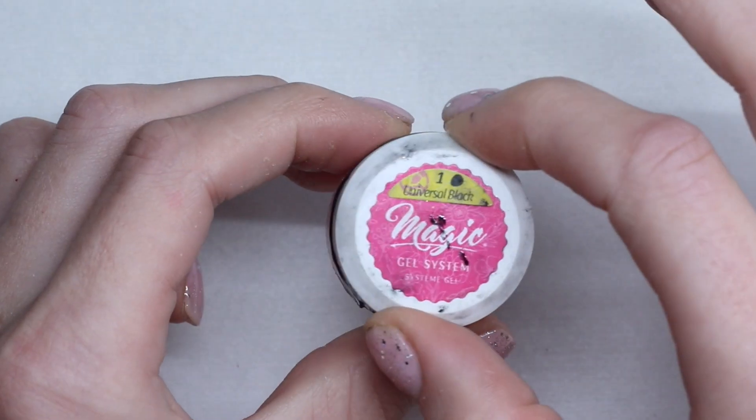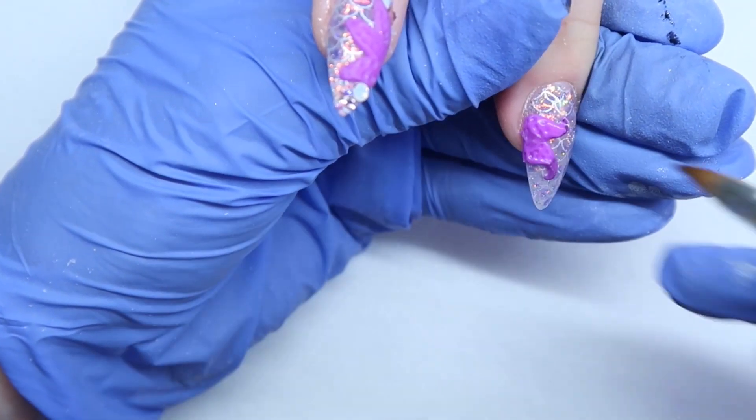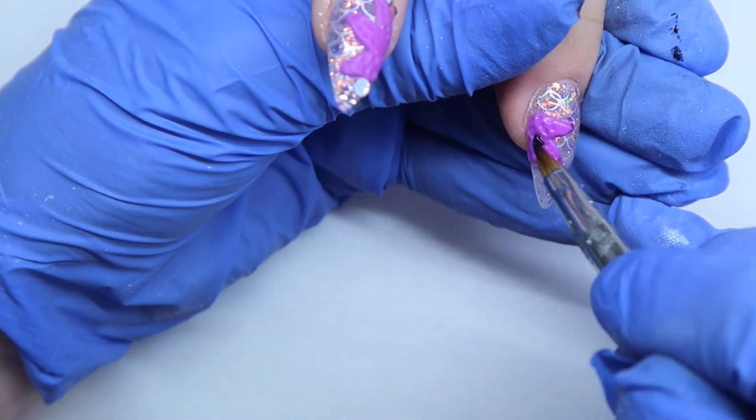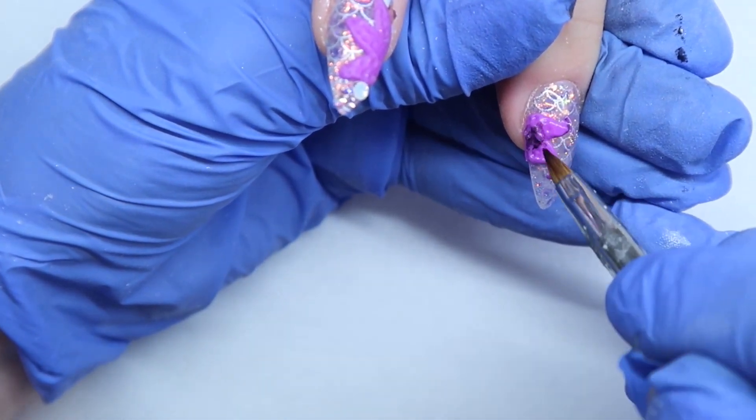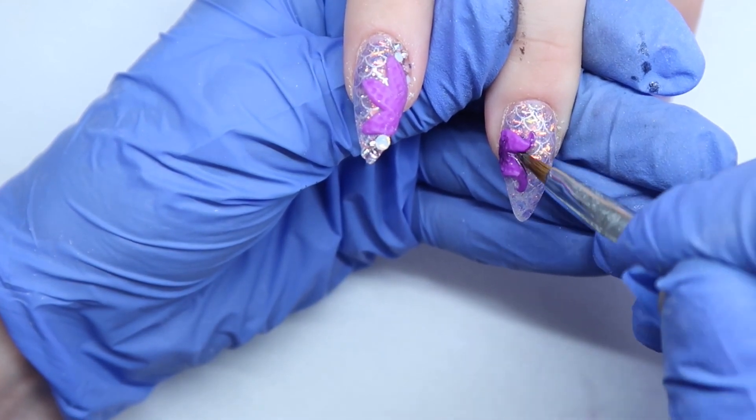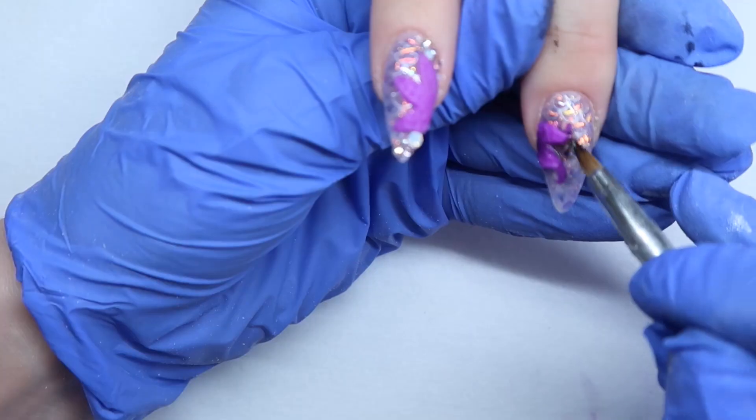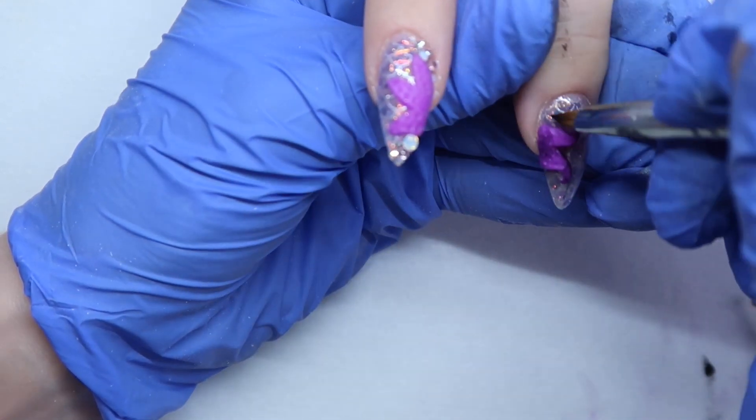Right before curing, I added a little bit of Magic Gel's Universal Black on the starfish to kind of make it look like grungy and dead. And then I am giving that a cure. And now I'm coming in and just adding more of that Universal Black around the starfish to give it some texture. And you know, make it look gross.